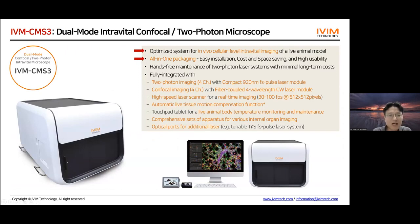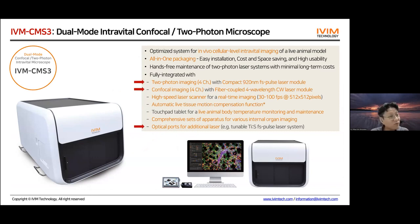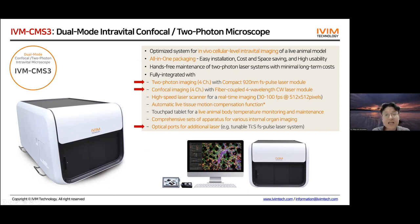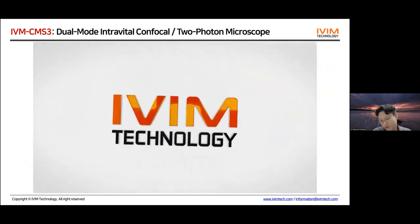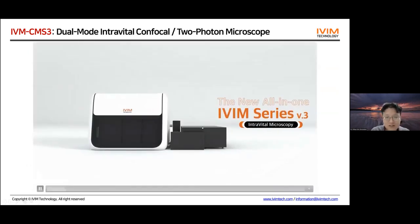Let me briefly introduce our dual-mode intravital confocal and two-photon microscope, the IVIM CMS3. It is a single-box, all-in-one system optimized for in vivo cellular-level imaging in live animal models. It can perform two-photon imaging with four different colors using a compact femtosecond pulse laser integrated inside the box. Simultaneously, it performs confocal imaging with four colors using four-wavelength confocal laser modules, and also has additional optical ports to connect external tunable Ti:Sapphire femtosecond laser systems.